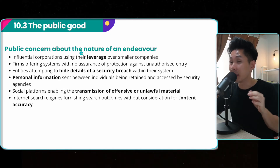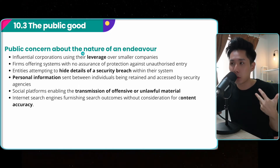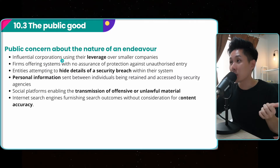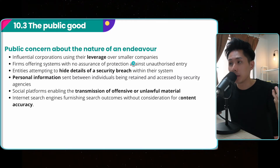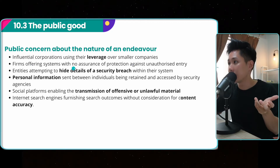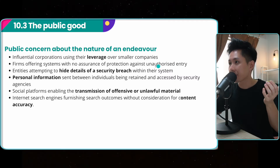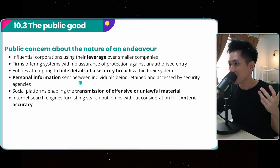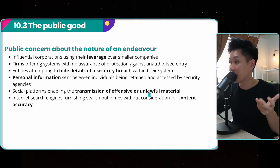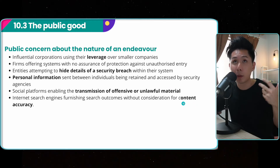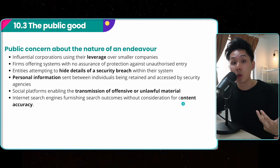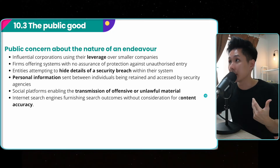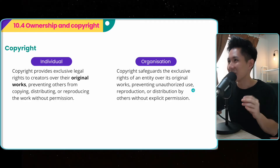So these are some public concerns about the nature of an endeavor when doing something for government or the public. Considerations include: influential corporations might use leverage over smaller companies to achieve monopoly; firms offering systems with no assurance of protection against unauthorized entry; entities attempting to hide details of a security breach — they don't let you know their system has been hacked. Also: transmission of offensive or unlawful material, and content accuracy, which is when a lot of fake news happens. But how do we control that, and if a lot of fake news is consumed by the public, is that good for society? This chapter is relatively philosophical, but bear with me.